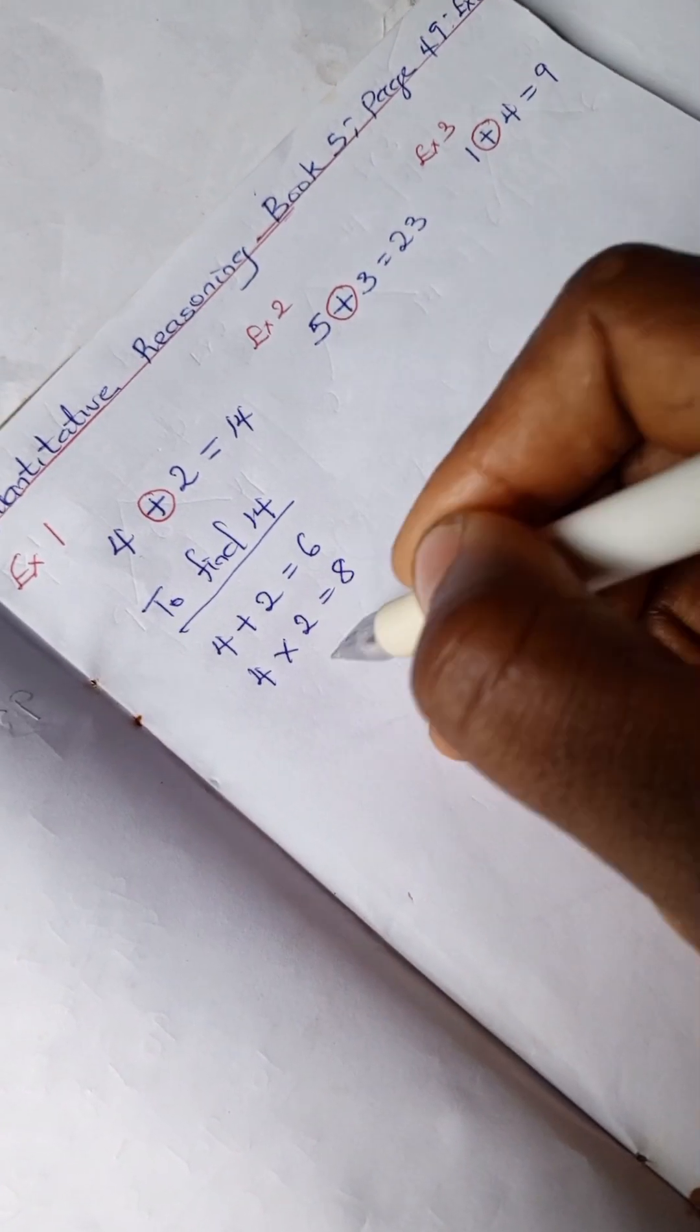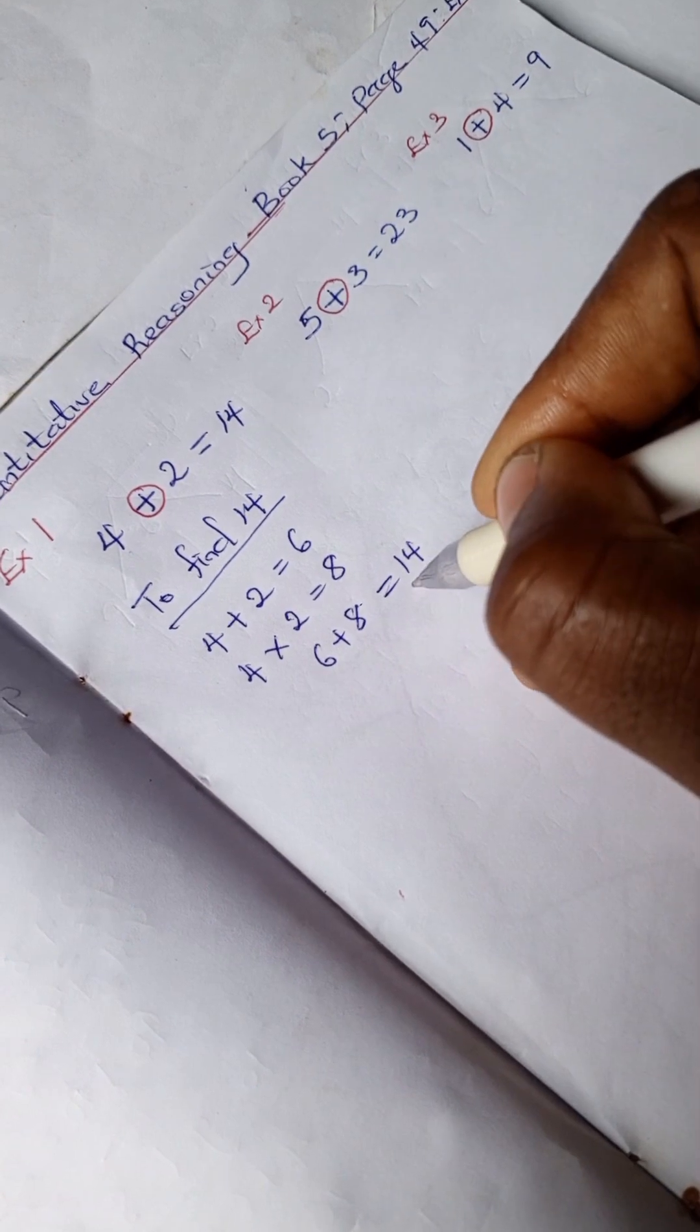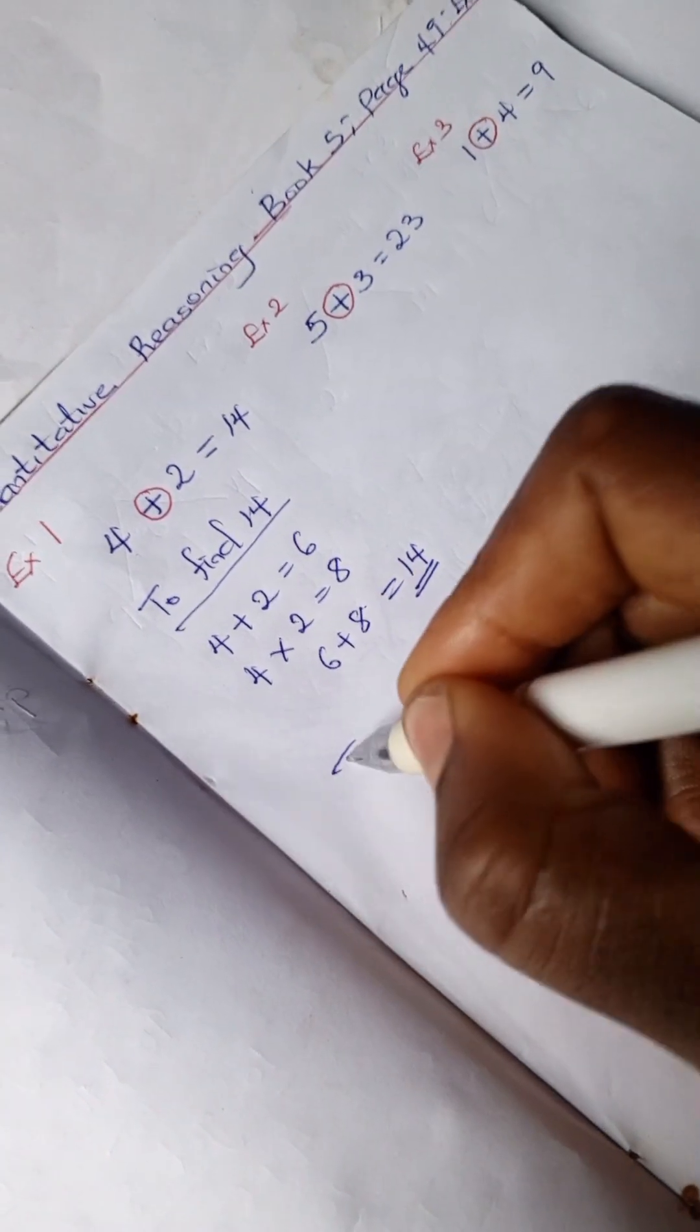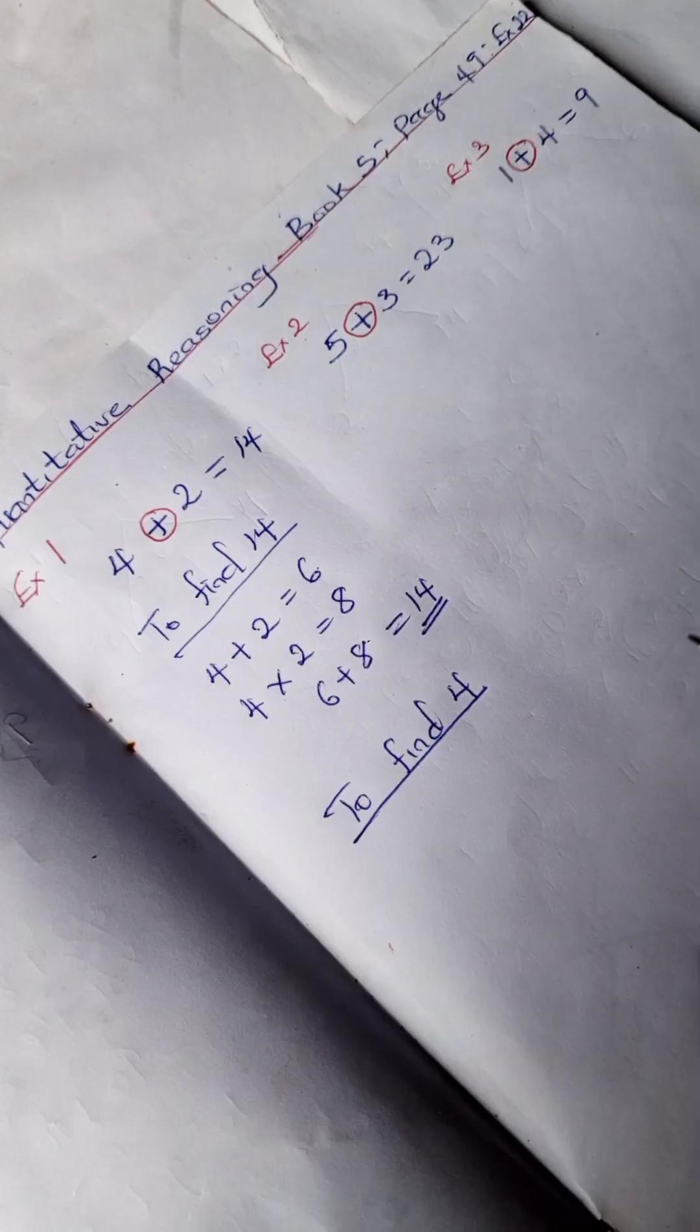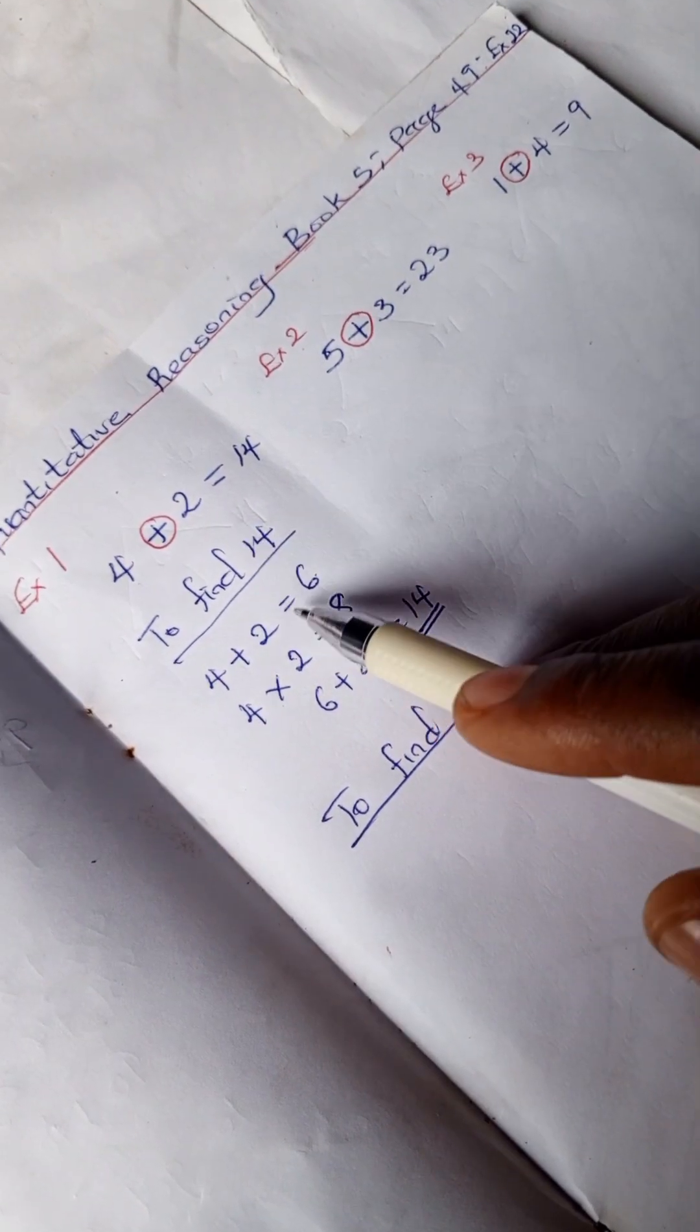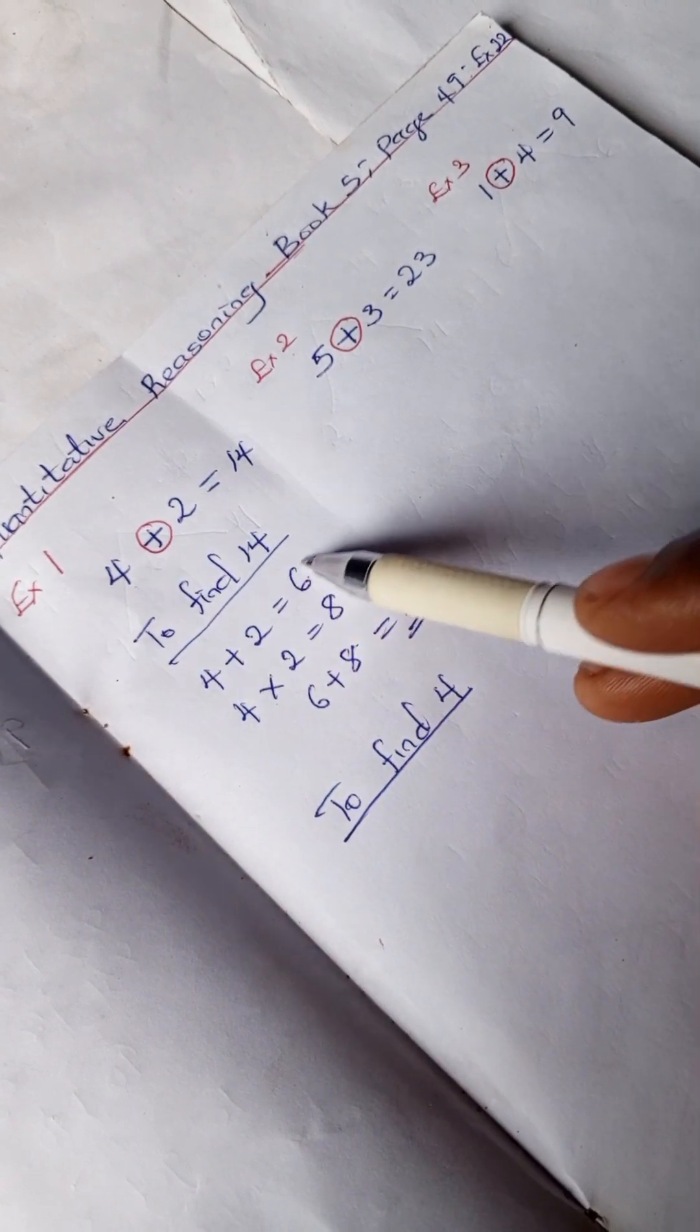equals 8. So 6 plus 8 is 14, right? To find 4, remember we had the sum of the equation...